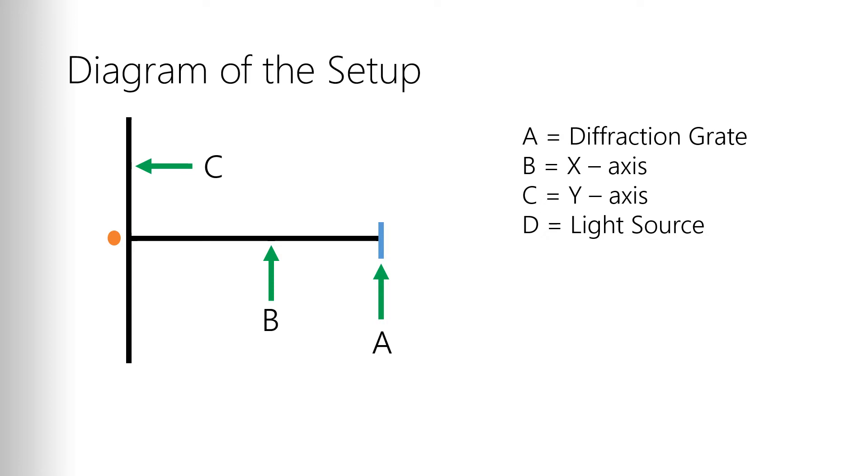Next up you have the y-axis. So this is the ruler that's set perpendicular to the first one. This is going to allow you to measure how far away from the light source you see the emission line through the diffraction grate. So you're going to measure the distance from the light source to the apparent emission line while looking through the diffraction grate.